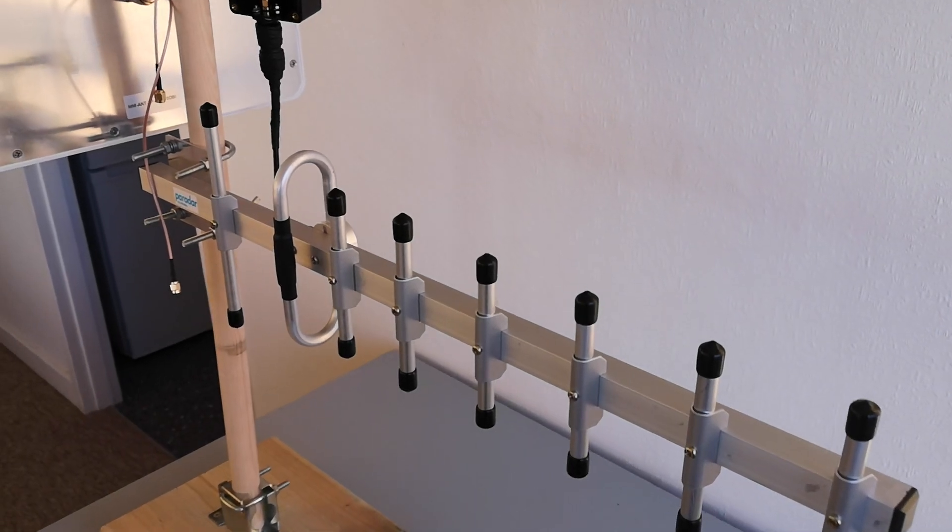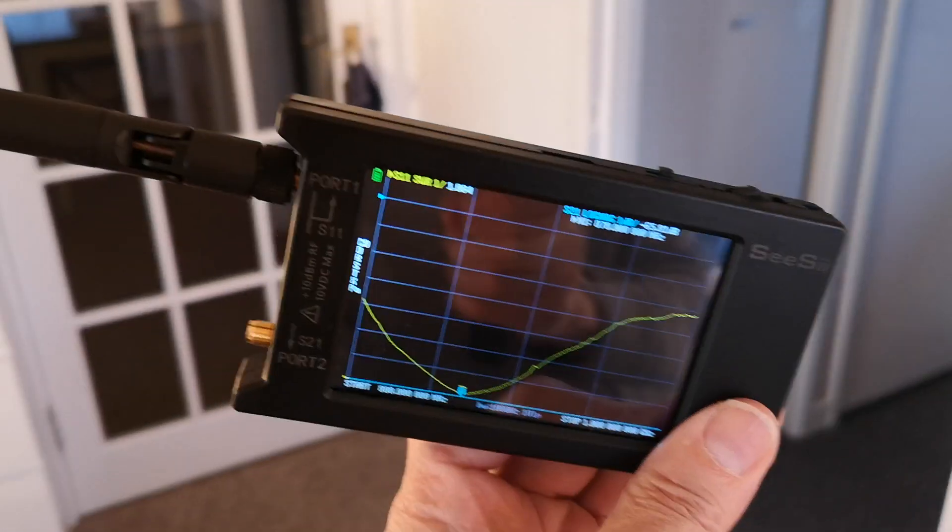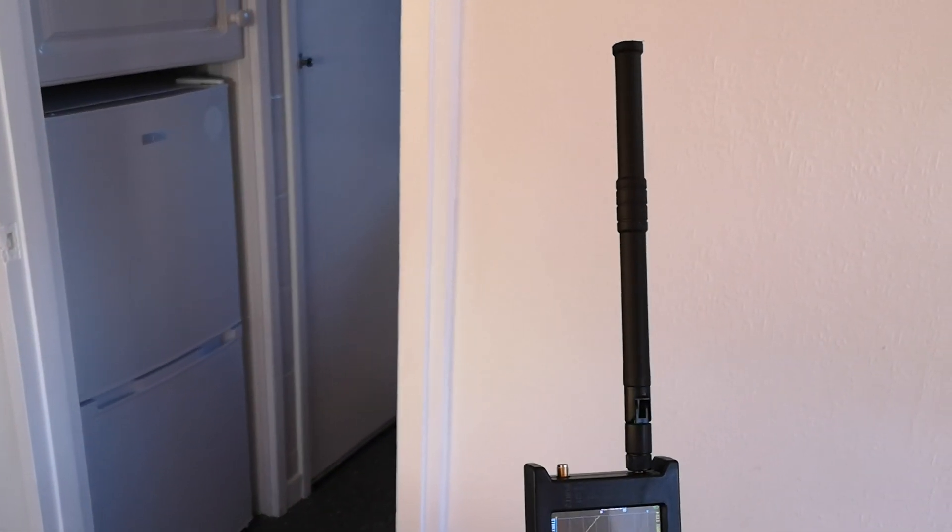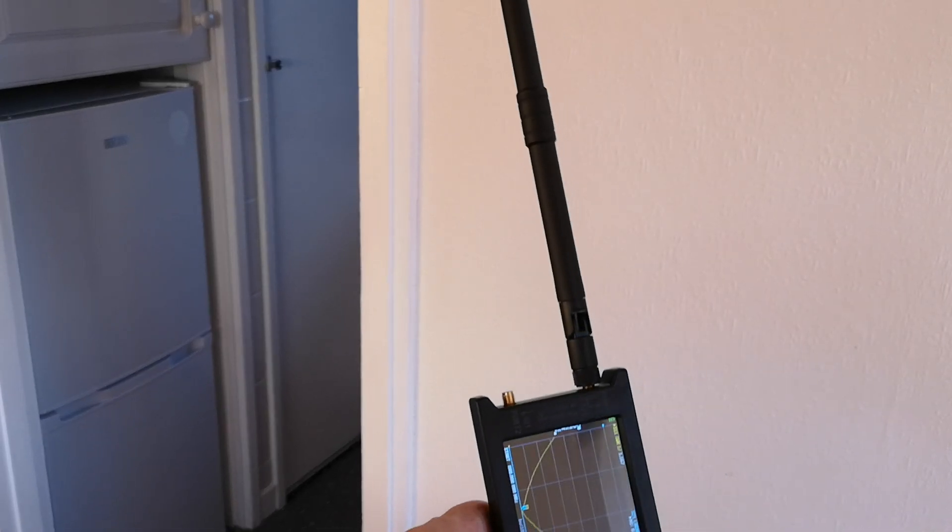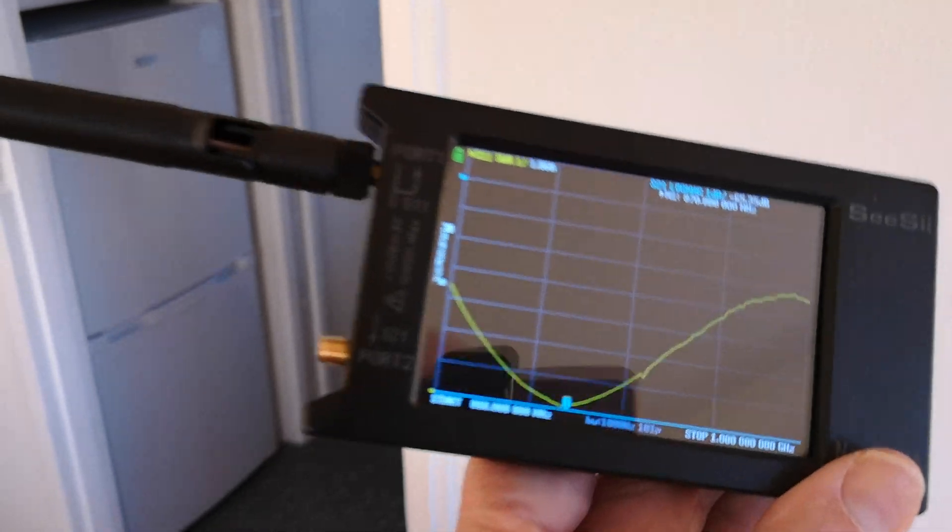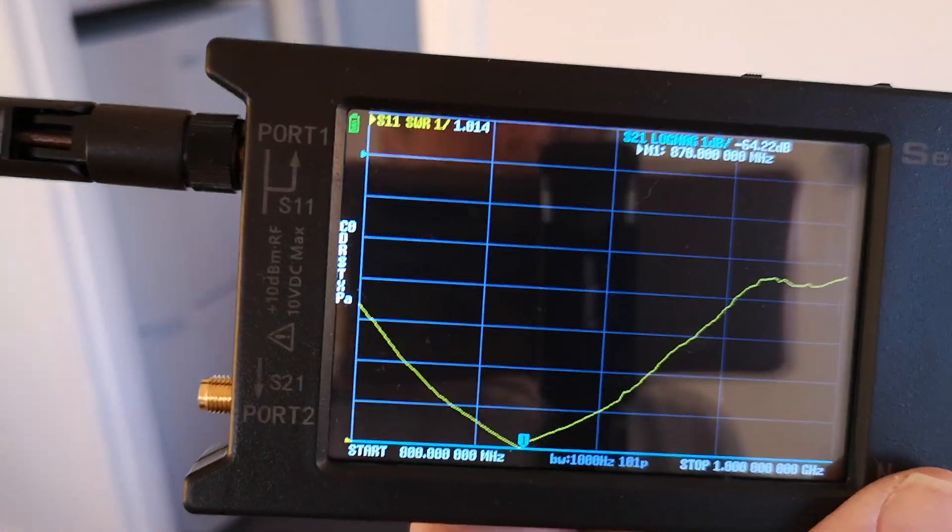For the reference test, first of all, using the Vector Network Analyzer VNA, I've connected my trusty modified antenna from China. I had to cut it in half and then tune it by soldering bits on. This is now optimized for 870 MHz, as you can see.